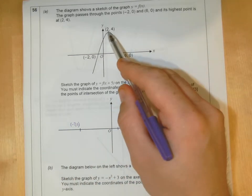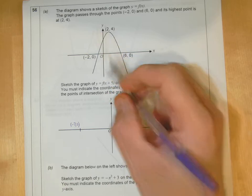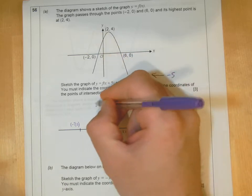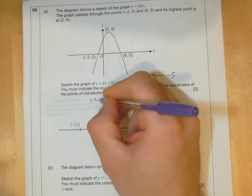And then this maximum point, well, take that back 5, it would be minus 3. Just a sketch, remember.